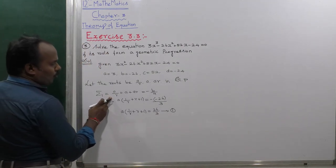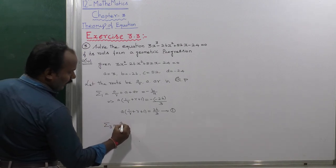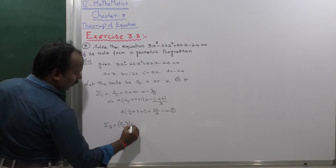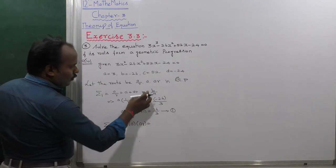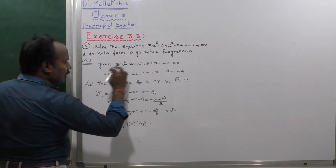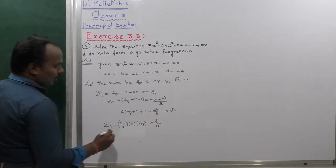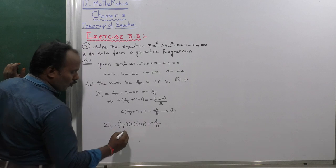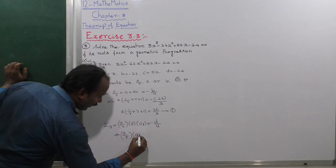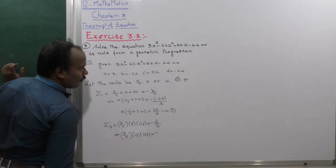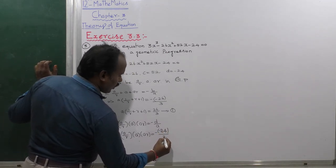Next, find the product of the roots, that is summation 3. The product of the roots A by R, A, and A·R equals minus D divided by A by Vieta's formula. So A by R times A times A·R equals minus 24 divided by 3.